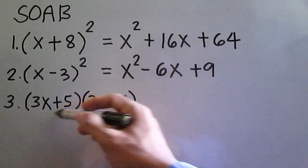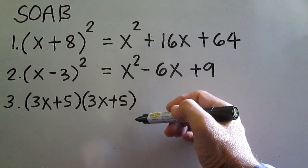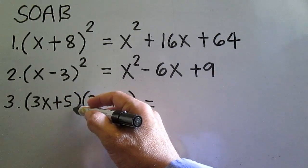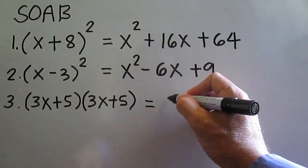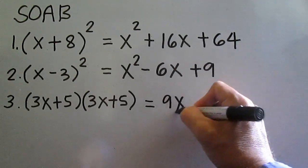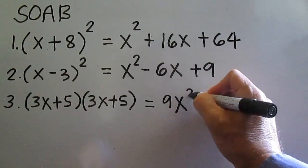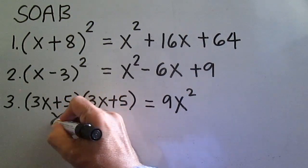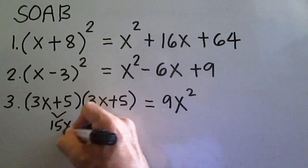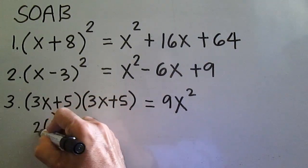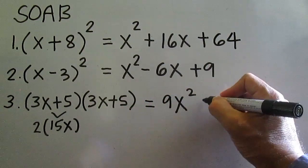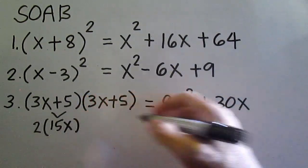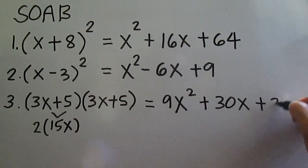Squaring a binomial is multiplying a binomial by itself. The product is: square of the first term, 3x times 3x is 9x squared. 3 times 3 is 9, x times x is x squared. Then 3x times 5 is 15x, times 2 is 30x plus 30x. Then 5 times 5 is 25.